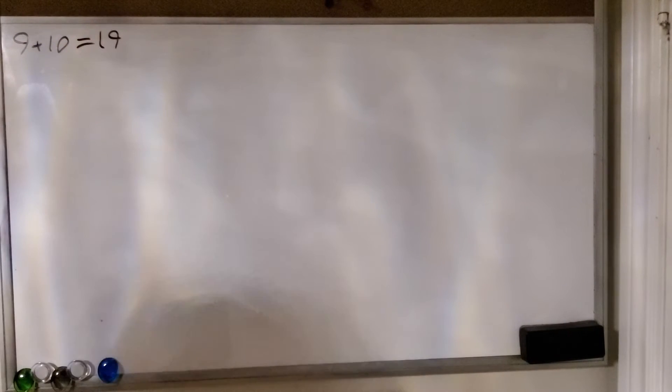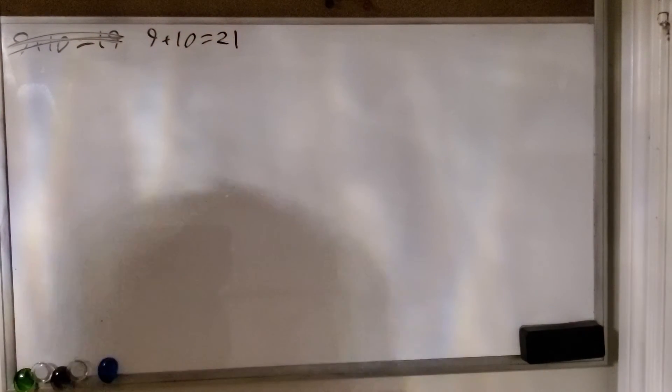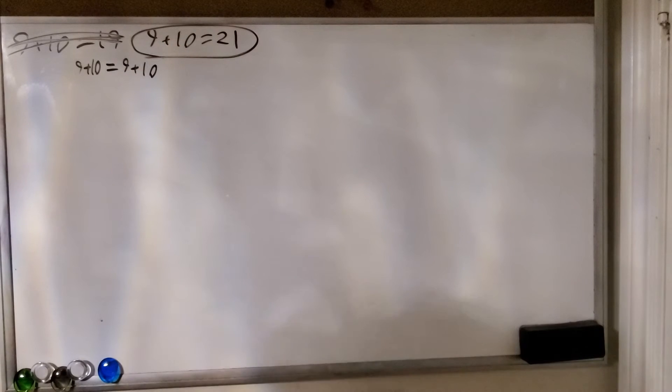So I think most of us think that 9 plus 10 equals 19, but you're wrong. You absolute fool, you imbecile. It's actually 21, and you should be ashamed of yourself for thinking otherwise. Now let me show you why. So I think all of us can agree that 9 plus 10 is equal to 9 plus 10.